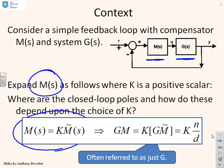The most important thing is what we've got here on the right. I can now write GM as K times n over d. For convenience you'll see we often denote this GM tilde just as G. The question we want to ask is, given that we've written this GM as Kn over d, where are the closed loop poles and how do these depend on the choice of K?